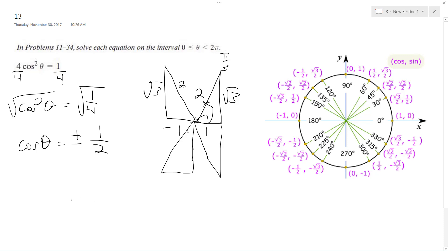So it's going to be theta equals pi over 3, 2 pi over 3, 4 pi over 3, and 5 pi over 3.